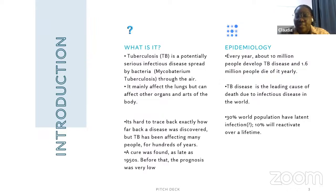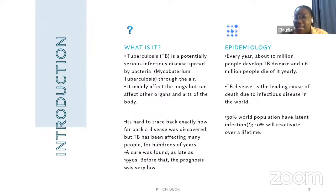Before the cure was found, the prognosis was very poor — lots of people died because they weren't aware of the disease and didn't know how to treat it. Every year there are over 10 million people who get this disease and 1.6 million people die from it yearly, which is why it's one of the leading infectious diseases in the world today. Also, 30% of the world population have latent infection.